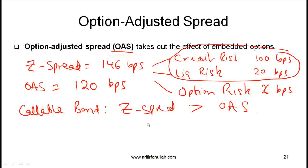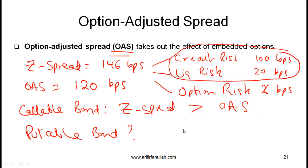If you have trouble understanding this, pause and think through the example. Then consider: for a putable bond, will the Z spread be greater than or less than the option adjusted spread? Think about it and check your study notes or curriculum. If you have understood what has been discussed here, you should be able to answer that question.